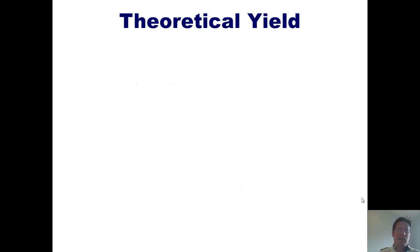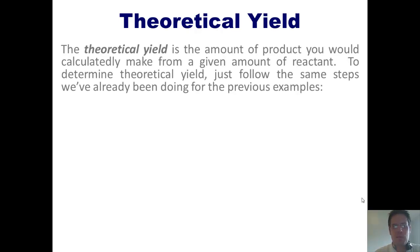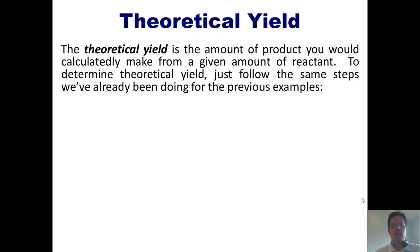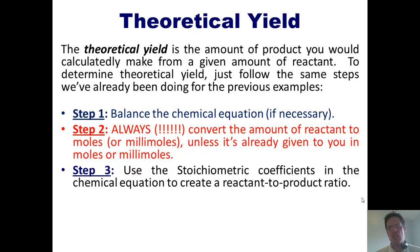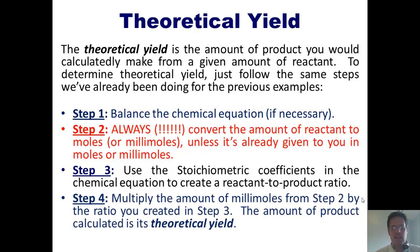This brings us to a new topic: theoretical yield. A theoretical yield is the amount of product that you would calculatedly make from a given amount of reactant. To determine theoretical yield, we follow similar steps: step one, balance the chemical equation; step two, convert everything to moles or millimoles; step three, use the stoichiometrically balanced chemical equation to determine how much product we get from a given amount of reactant; step four, multiply the moles from step two by the ratio from step three. The amount of product we calculate is the theoretical yield.